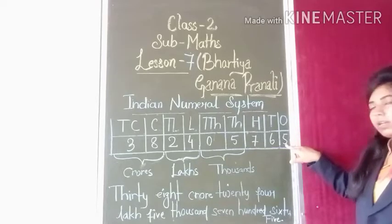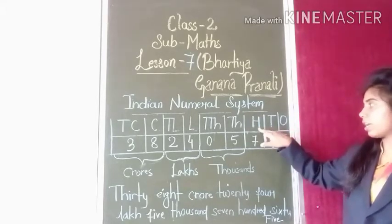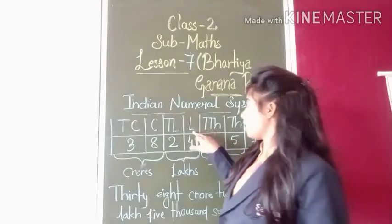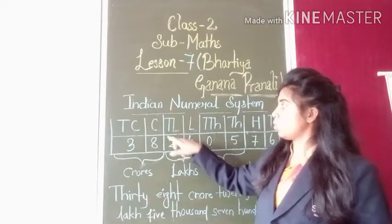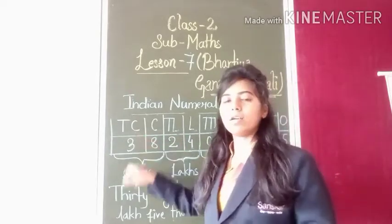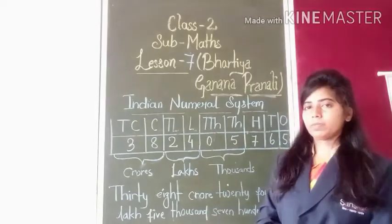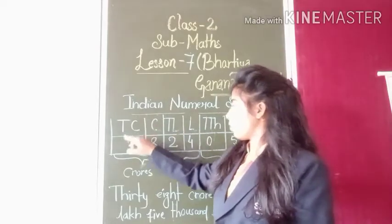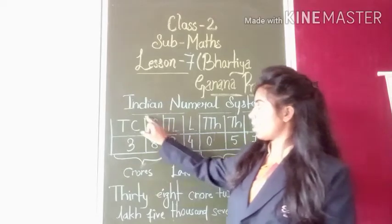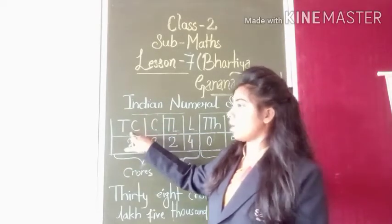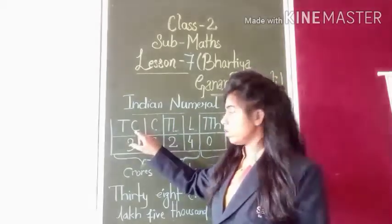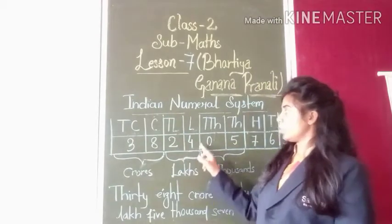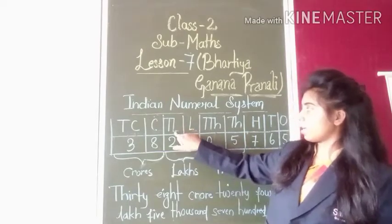Now, in the ones place the number is five, tens place is six, hundreds place is seven, thousands place is five, ten thousands place is zero, lakhs place is four, ten lakhs is two, crore is eight, and ten crore is three. The two columns — ten crore and crore — together we call 'crore.' Similarly, the two columns ten lakhs and lakhs together we call 'lakhs.'